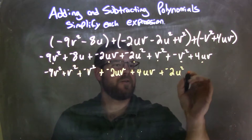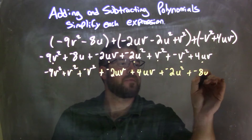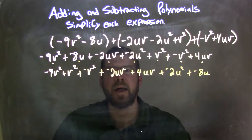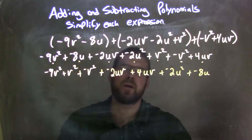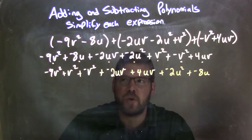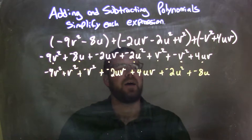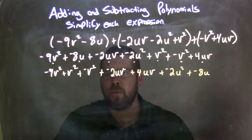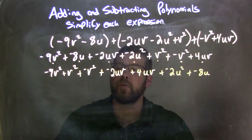The last terms: we have a plus a negative 2u squared right there, and a negative 8u. Now, the order doesn't necessarily matter per se — some teachers want all the highest degrees first and then just keep going down from there. I wouldn't mark a student off for having it a little differently.